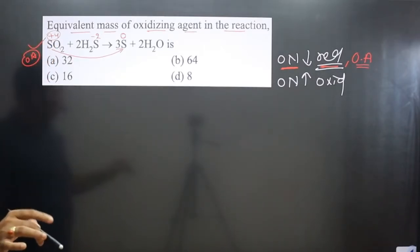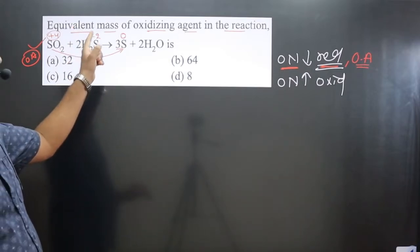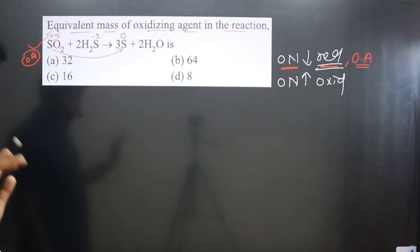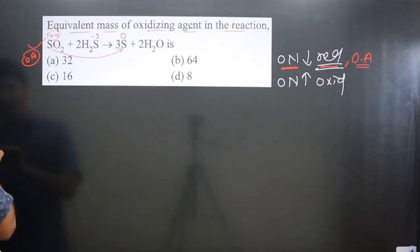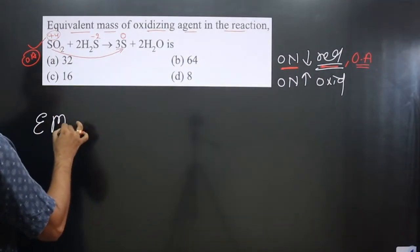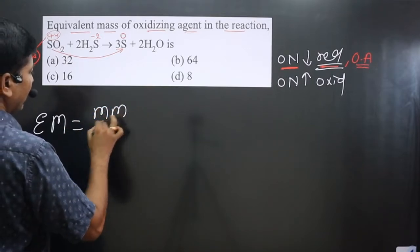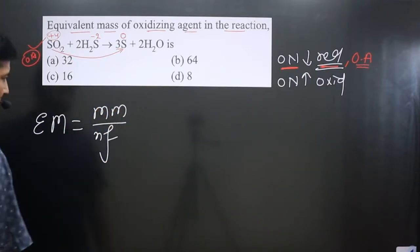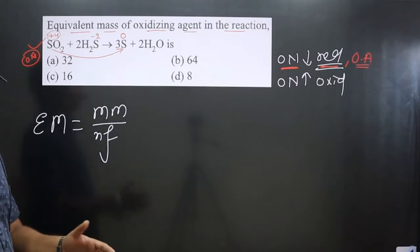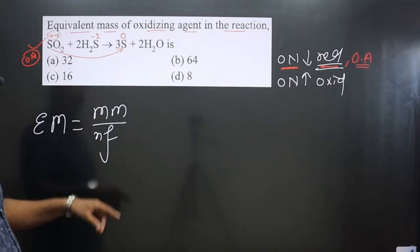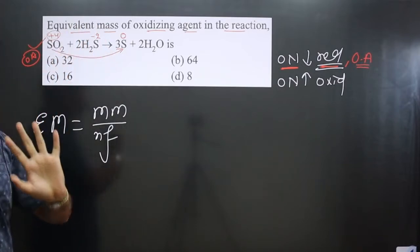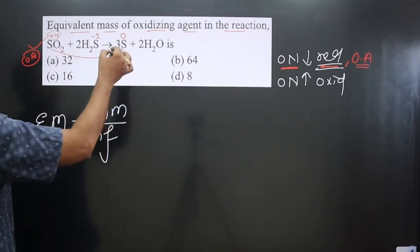We have identified SO₂ as the oxidizing agent, so we need to calculate the equivalent mass for sulfur dioxide. The formula is: equivalent mass = molar mass divided by n-factor. The molar mass of SO₂ can be calculated using the periodic table, and the n-factor value can be calculated using the oxidation numbers from the equation. We should not focus on the coefficients in the balanced equation, as they do not play any role in calculating the n-factor.